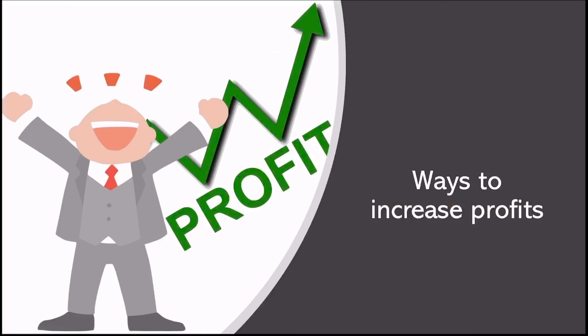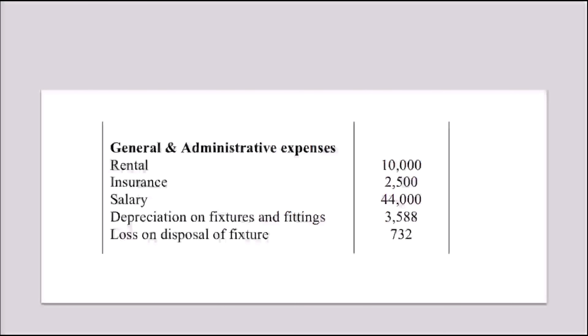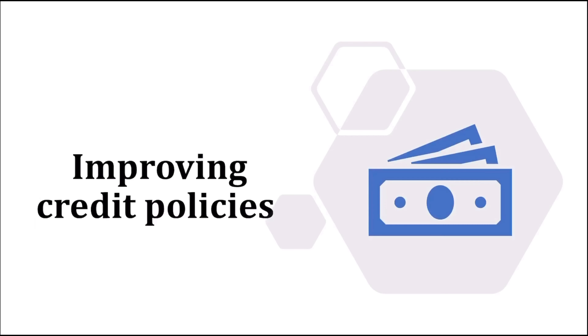As such, it is advisable for Alex to focus on sustaining his business rather than expanding it. The best method to do that is by increasing the company's profit. Firstly, he can start by keeping track of overhead expenses such as labour costs by using a job costing sheet. This way, he can manage the labour costs and reduce the expenses on salary, which is the largest component of expenses in the income statement.